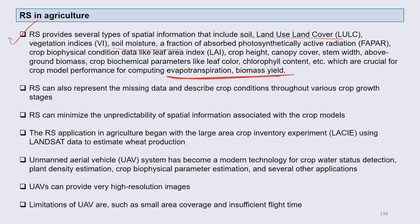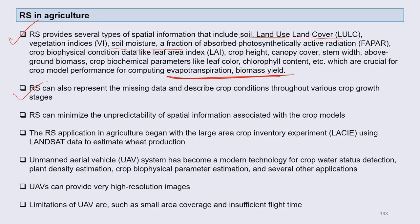If you recall the modeling lectures, we discussed in great detail how inputs come from different climate models and remote sensing information, and how these can be integrated in a coupled manner. We also discussed how coupling of hydrological models and crop models can be done, and utilization of artificial intelligence, GIS, and remote sensing is now possible. Remote sensing can also represent missing data and describe crop conditions throughout the various crop growth stages.